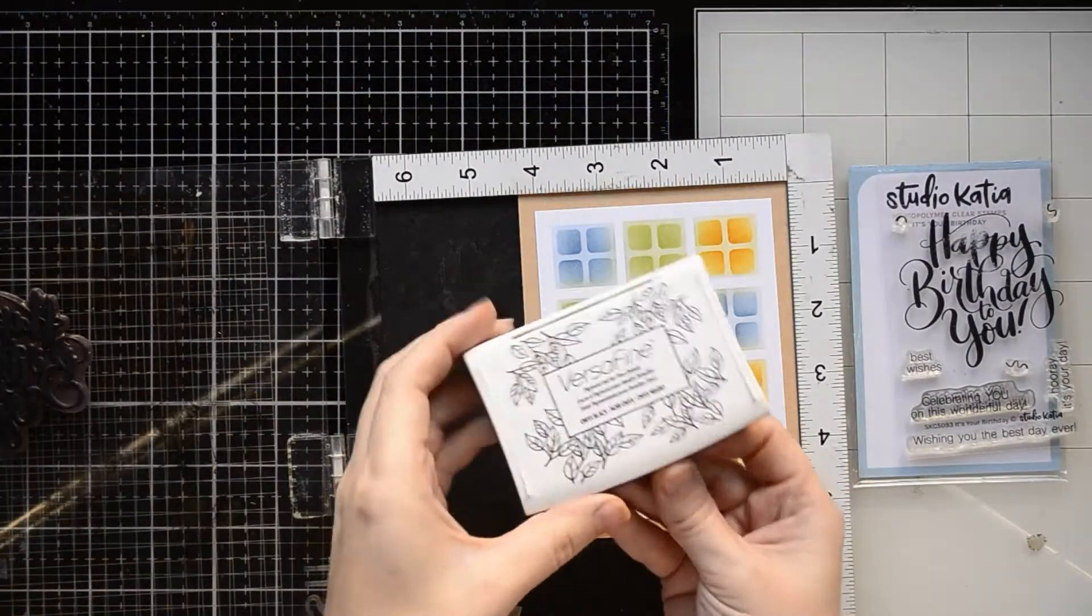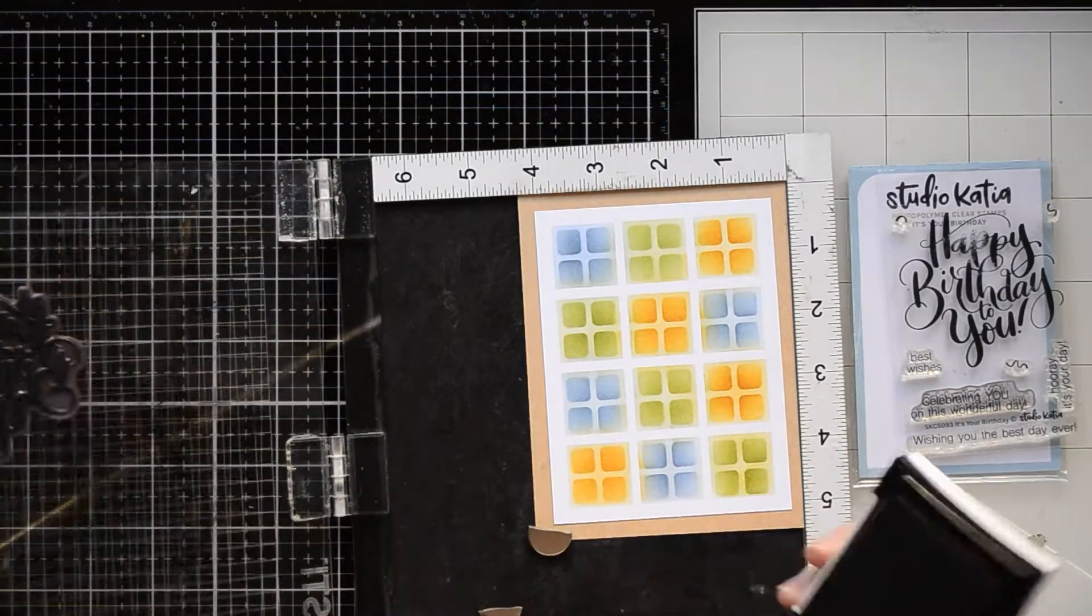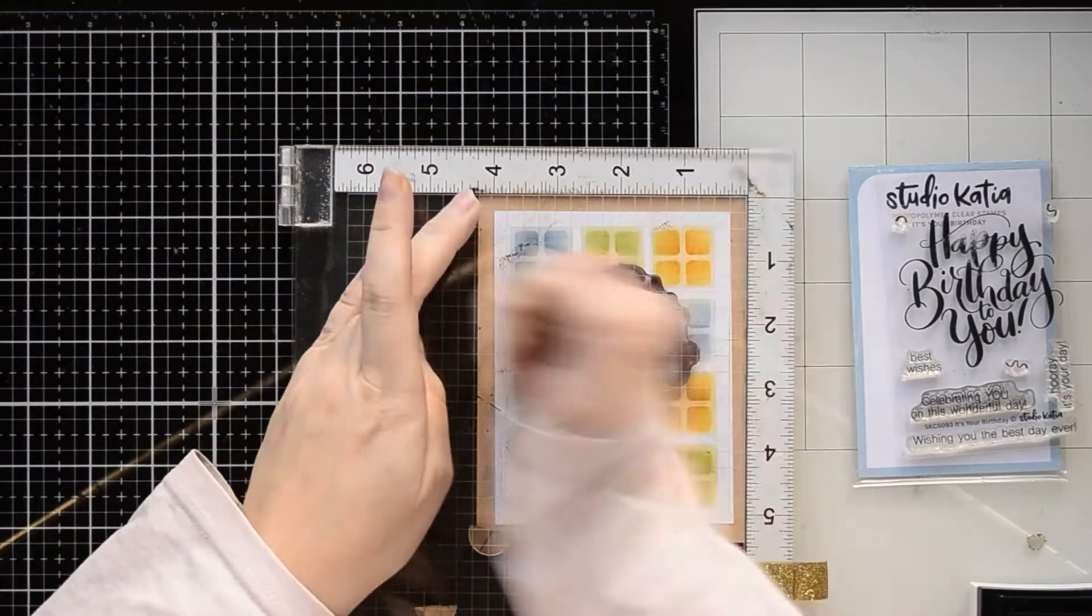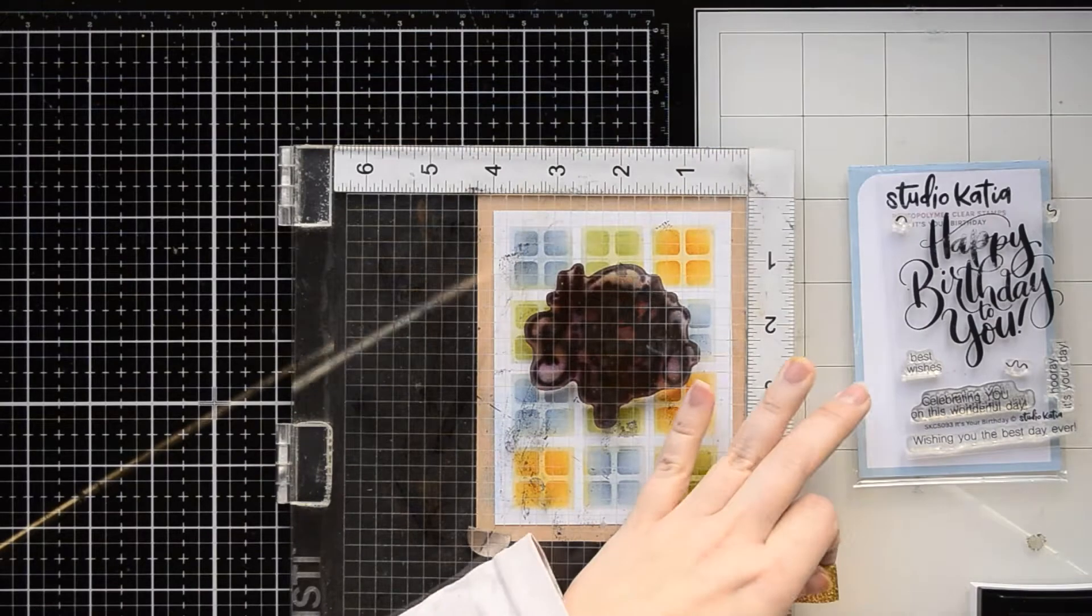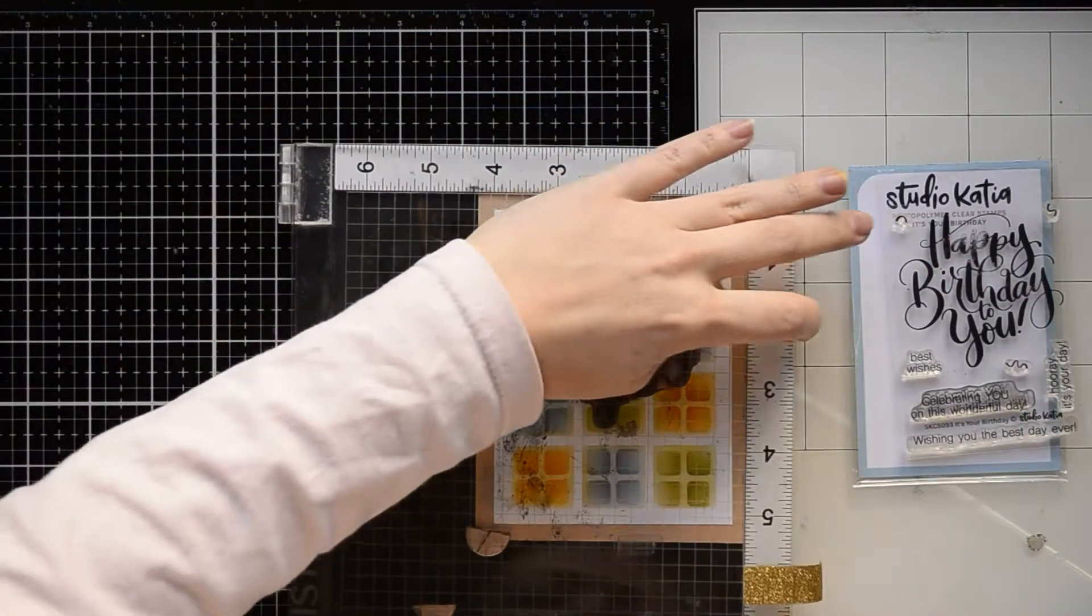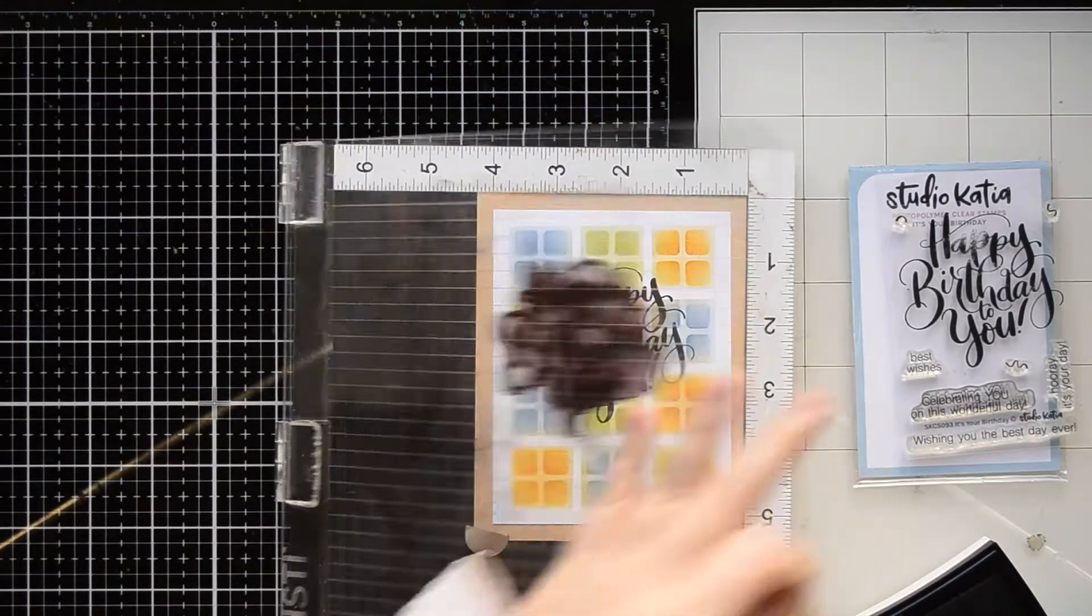As I kept the first panel without any dimensional elements, I can stamp the sentiment directly on it. I'm using a large stamp with a birthday greeting and VersaFine black ink. I'm using the stamping platform just in case I need to re-stamp the sentiment a couple of times.